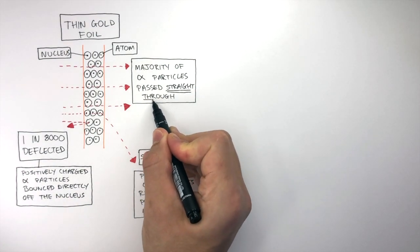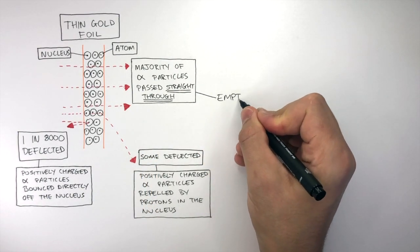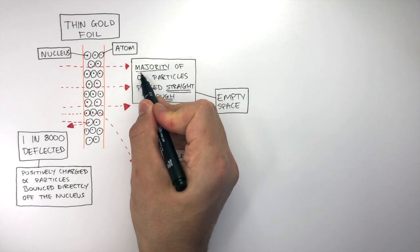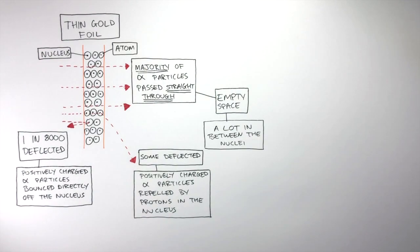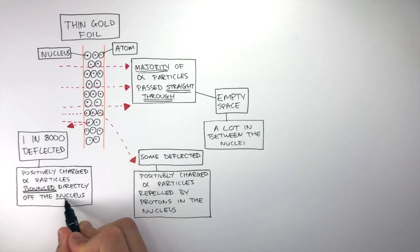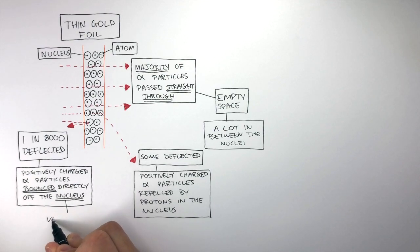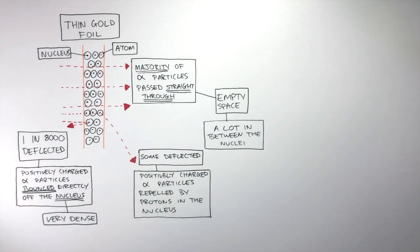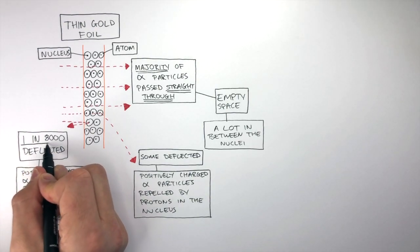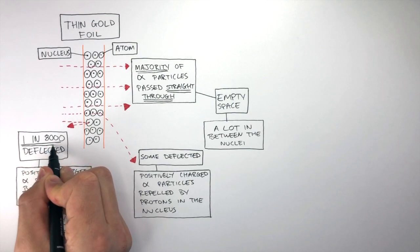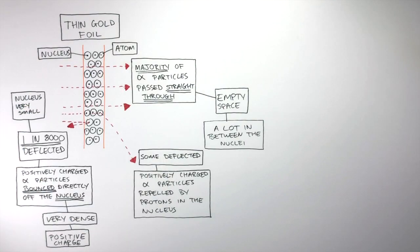So Rutherford realised that for alpha particles to pass straight through, there must have been empty space. And because the majority of the alpha particles passed straight through, this means there was a lot of empty space in between the nuclei. Because the alpha particles bounced off the nucleus, the nucleus must be very dense, as alpha particles themselves are very dense. We know the nucleus has a positive charge because the positively charged alpha particles were repelled by the positively charged nuclei. And because only 1 in 8,000 alpha particles were repelled straight back, this means the nucleus must be very small, with a lot of empty space in between.